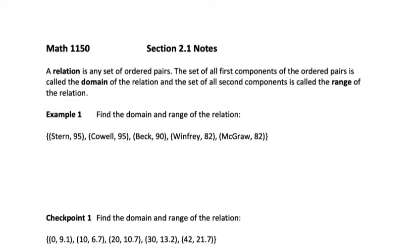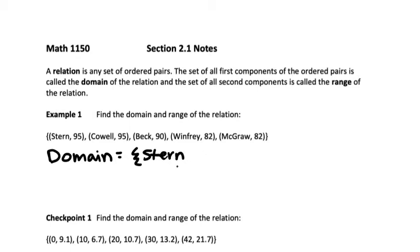In example 1, we need to find the domain and range of the relation. We have a set of ordered pairs where the input values are names and the output values are numbers. Starting with the domain, you'll see in the homework they put a squiggly bracket, and you type the values inside it — that indicates a set of values, or really just a group. So I'm going to list the input values, or first components, in my domain.